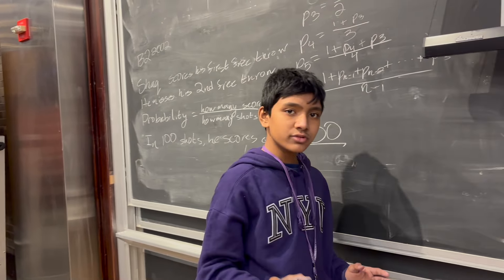So this is divided by 4, which is the amount of shots he will have taken right before that. So you can see the pattern, Pn is equal to 1 plus Pn minus 1 plus Pn minus 2 plus dot dot dot plus P3 divided by n minus 1.